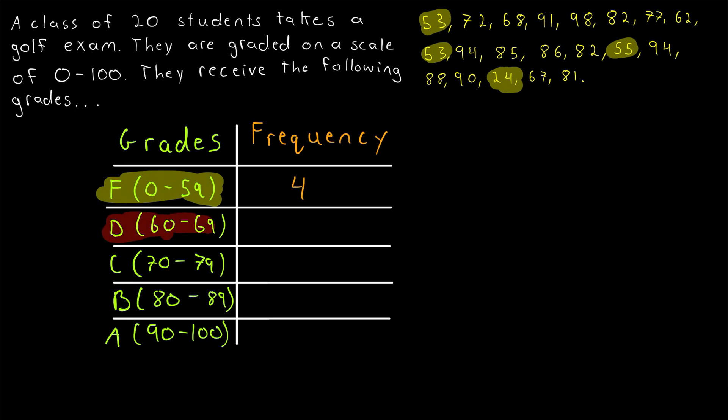Now let's count up all of the D's, the scores between 60 and 69. Once again, draw the attention to the data set. There's 1D. Keep on looking through. There's a 62. That's a second D. And that's it. Actually, no, there's a 67 as well. 3D's. So I'll write that there, 3.